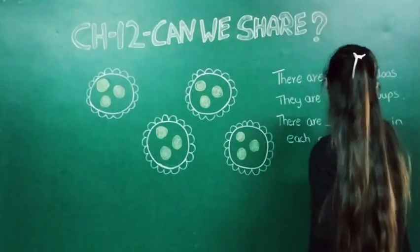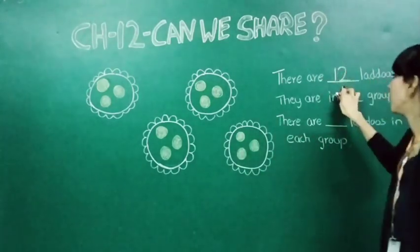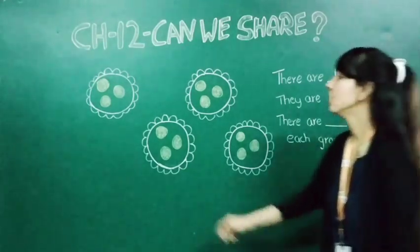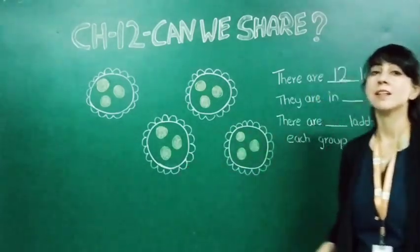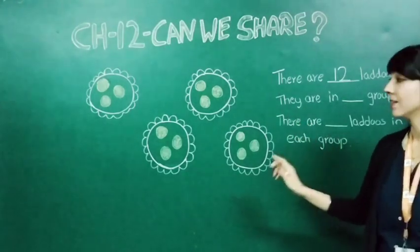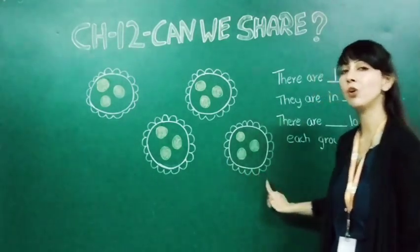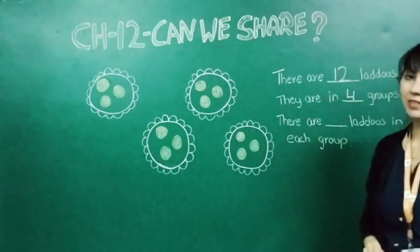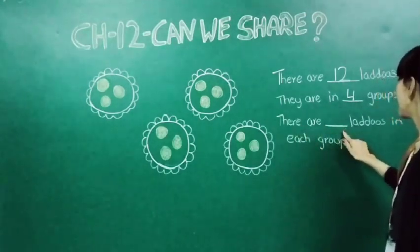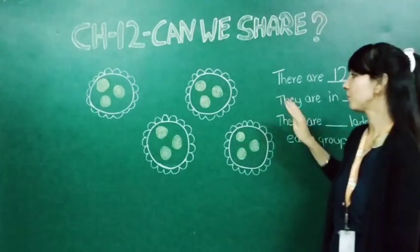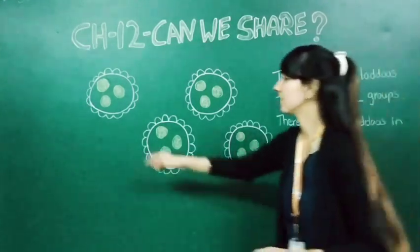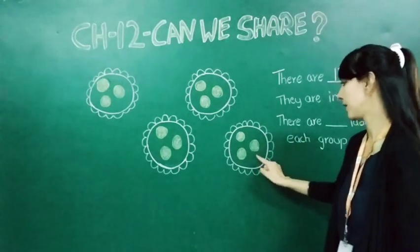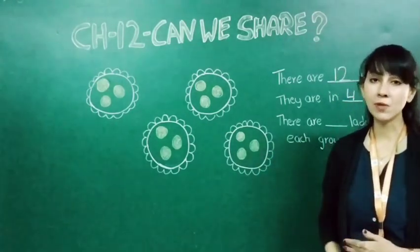There are twelve ladoos, so here we write twelve in this blank. Now let's see the next one. They are in dash groups. As you can see, four plates are there — means they are divided into four groups: one, two, three and four. So here it will come: they are in four groups, so here we will write four. Now moving to the next question. There are dash ladoos in each group. In each plate or group, how many ladoos can you find?